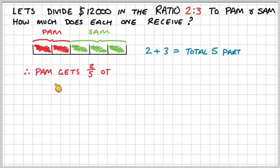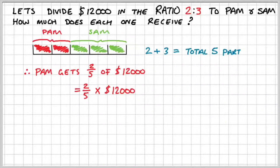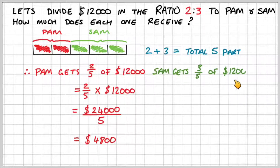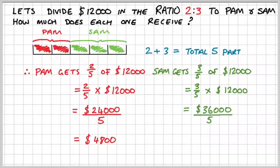Pam is going to get two-fifths of $12,000. Two over five times $12,000 is $24,000 over five, which gives us $4,800. So Pam receives $4,800. Sam gets three-fifths of $12,000, which is three over five times $12,000. Thirty-six over five gives us $7,200. So Sam receives $7,200.